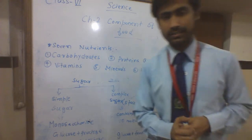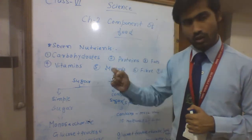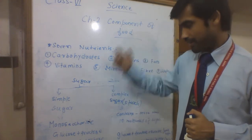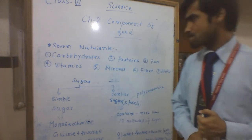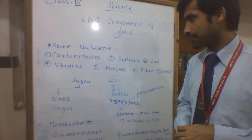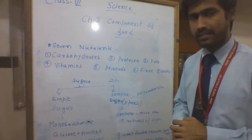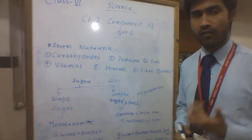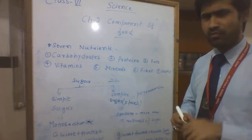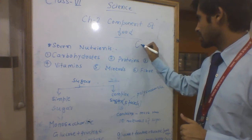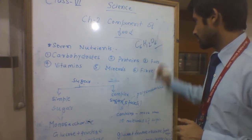The remaining nutrients are minerals and water. Today we will talk about carbohydrates in detail. Carbohydrate is an energy-giving food and it is a combination of carbon, hydrogen, and oxygen. The general and basic formula of carbohydrate is C6H12O6.